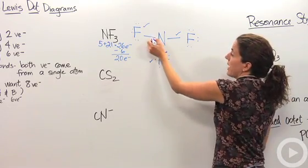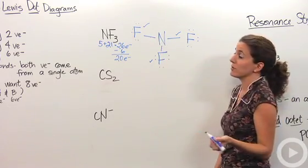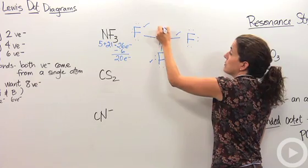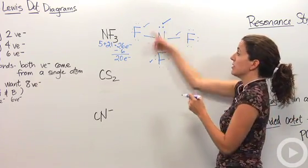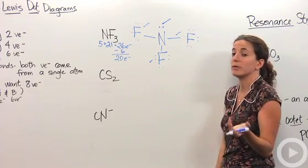We have two electrons left. Nitrogen has two, four, six, because don't forget those are shared between them. And the two left over, making everybody have eight around it. Fantastic. Awesome. So this is what nitrogen trifluoride looks like in a Lewis dot diagram.